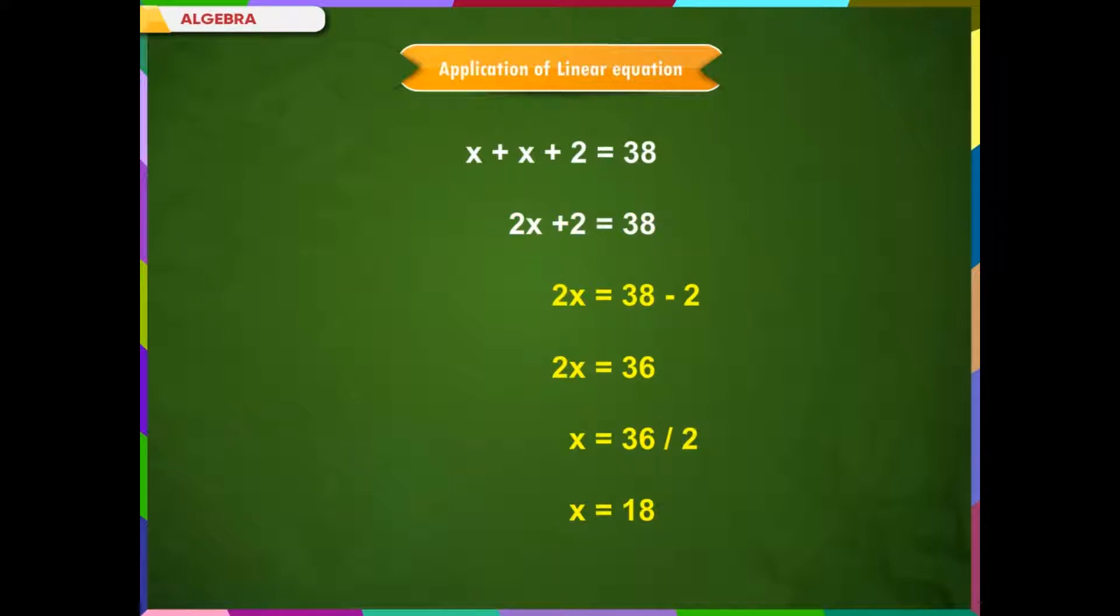2x plus 2 is equal to 38. 2x is equal to 38 minus 2. 2x is equal to 36. x is equal to 36 divided by 2, and thus x is equal to 18.